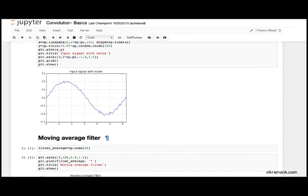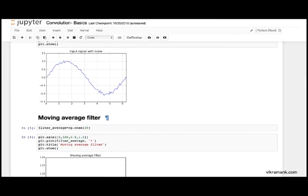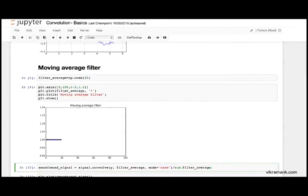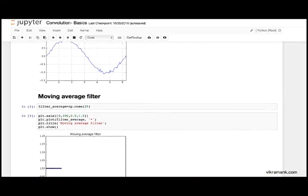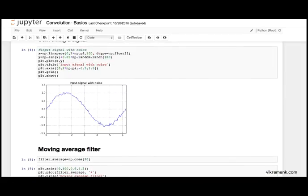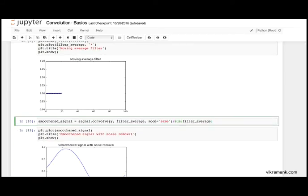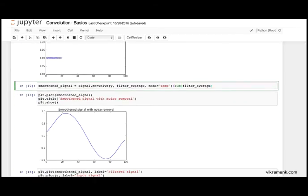I take a very popular filter which is called the moving average filter. This is my filter and then I convolve this filter with the input signal and it basically averages out the neighboring values and removes out the noise. You can see a nicely varying signal after convolution.